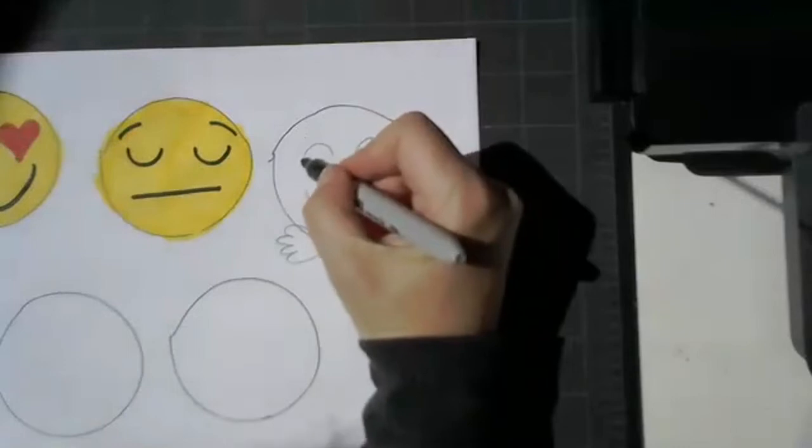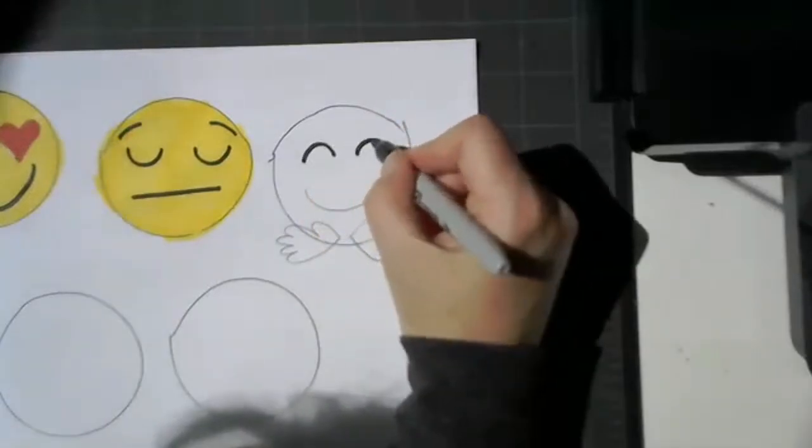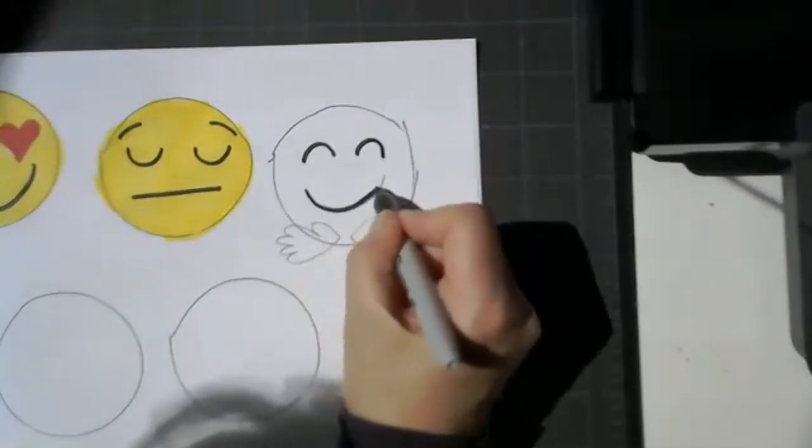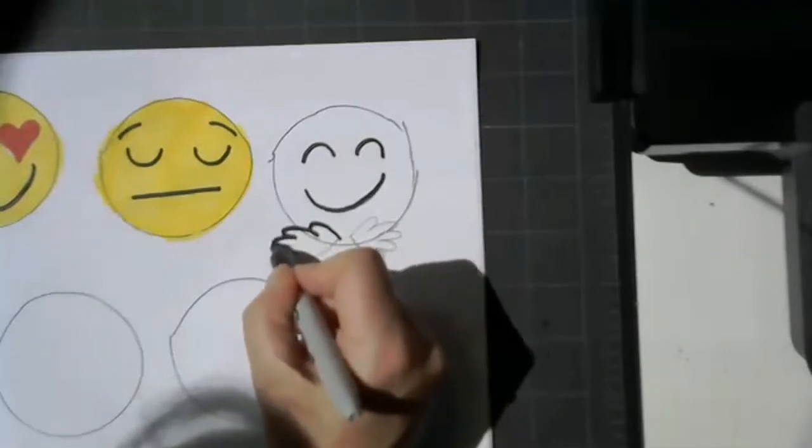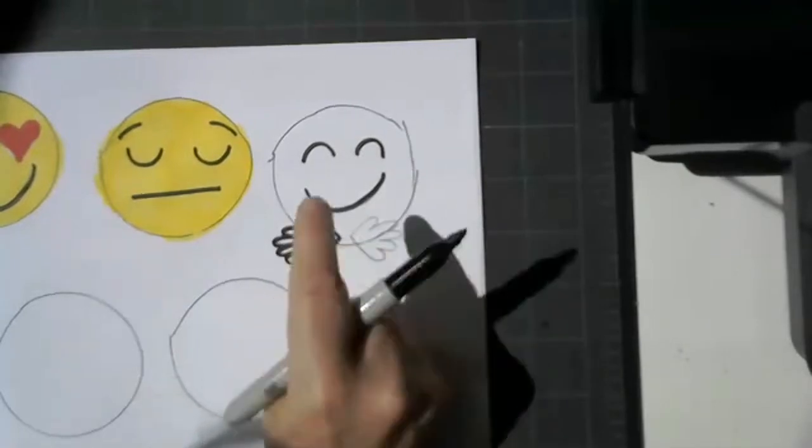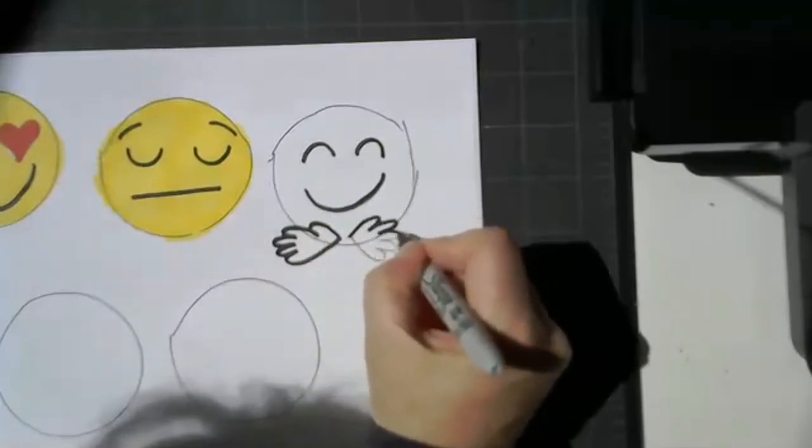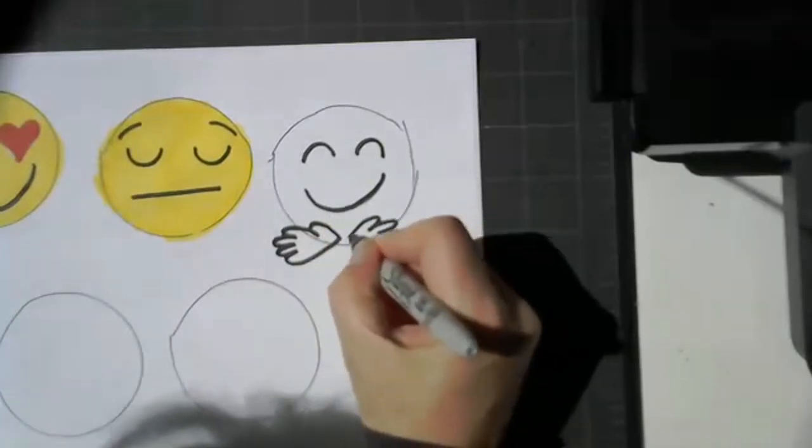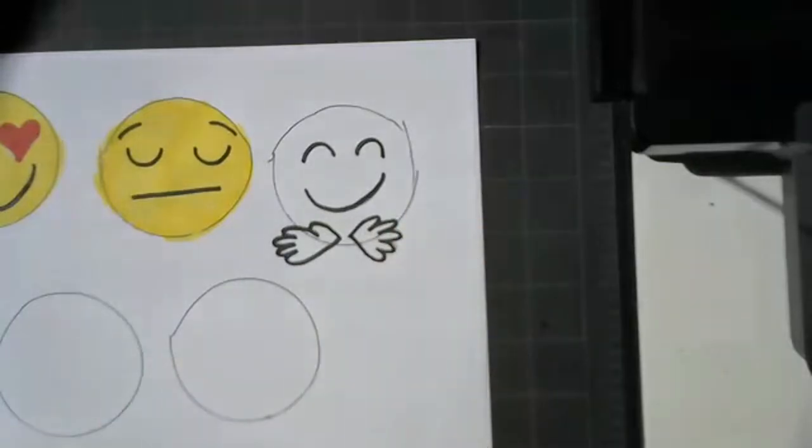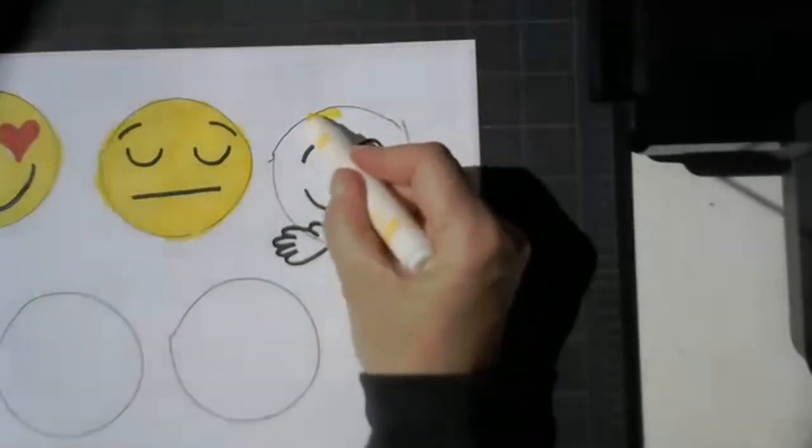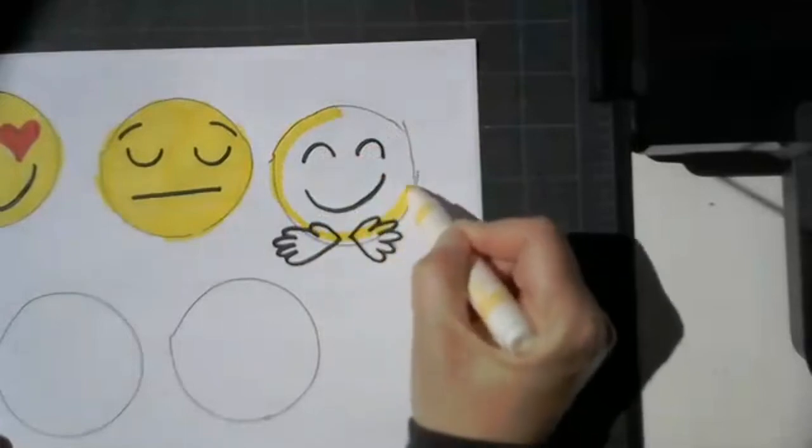I'm going to trace over this with my sharpie. Now hopefully if you had done this in pencil, you could erase that line right there. But I did it in sharpie so you could see it better. We'll just pretend I did, right?